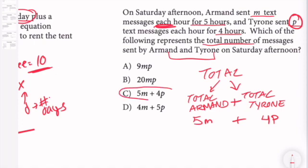It's important to not get your variables mixed up here because it does matter, right? This answer choice D is wrong. You can't mix up your variables here.